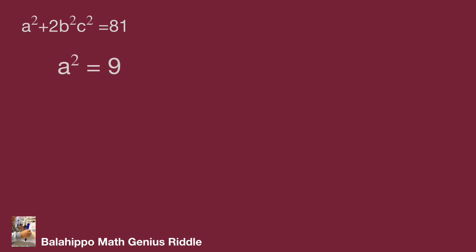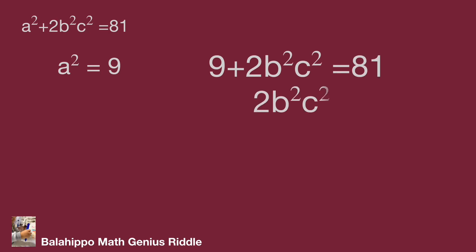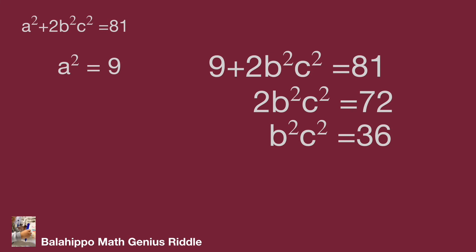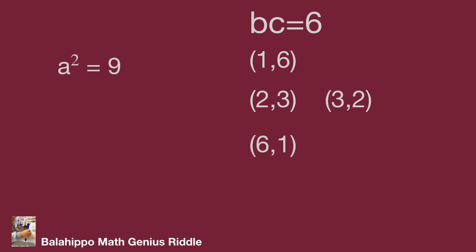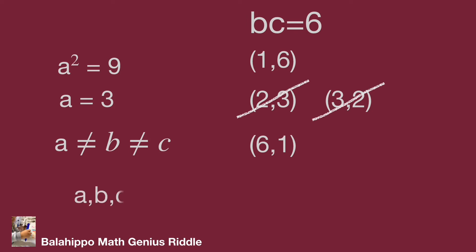If a squared equals 9, the same operation gives b squared times c squared equal to 36. Taking the square root of both sides, b times c equals 6. The bc value groups are 1 times 6, 2 times 3, 3 times 2, and 6 times 1. Since a equals 3, we eliminate any bc group containing 3, as a not equal to b not equal to c. The remaining valid (a, b, c) groups are 3, 1, 6 and 3, 6, 1.